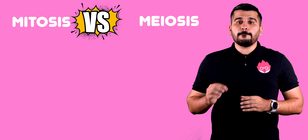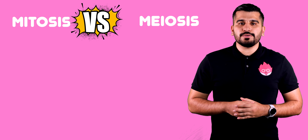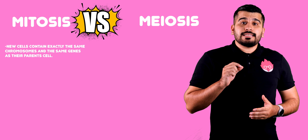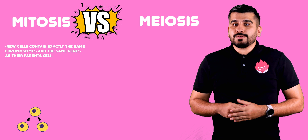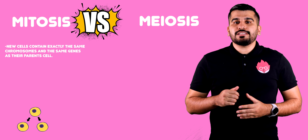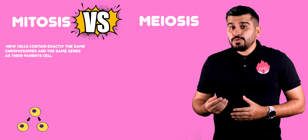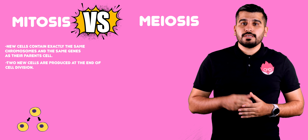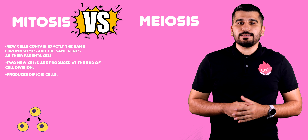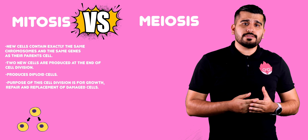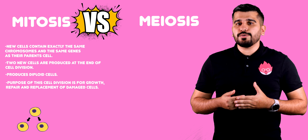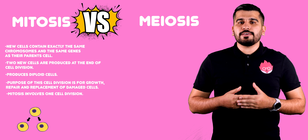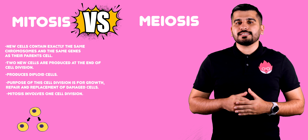Let's compare mitosis with meiosis. In mitosis, the new cells contain exactly the same number of chromosomes and the same genes as their parents. Two new cells are produced at the end of cell division. This type of cell division produces diploid cells. The purpose of mitosis is growth, repair, and the replacement of damaged cells. Mitosis involves one cell division.